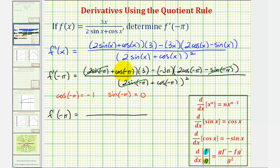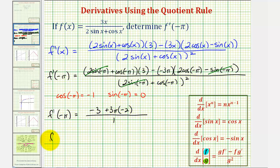We'd have negative one here times three, that's negative three. Next we'd have plus three pi times two times negative one, that's negative two. Now going to the denominator, we would have just negative one squared, which is positive one. So this simplifies nicely to negative three minus six pi.